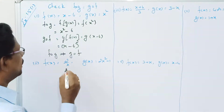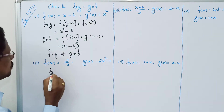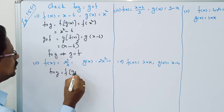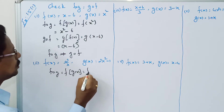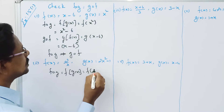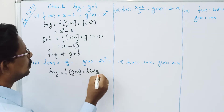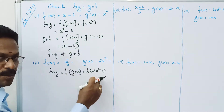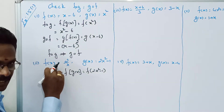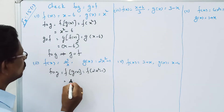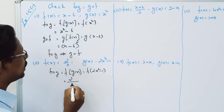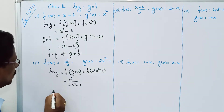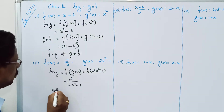Now F composition G — F of G of X — is equal to F of 2X squared minus 1. That is equal to 2 divided by 2X squared minus 1.